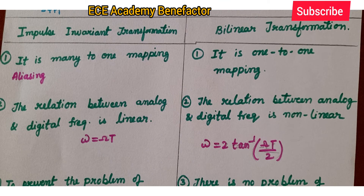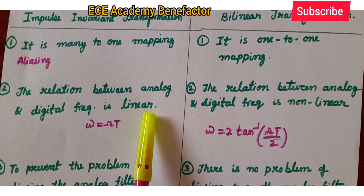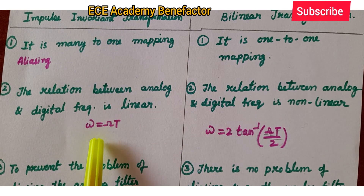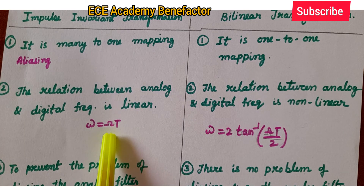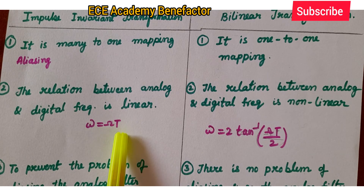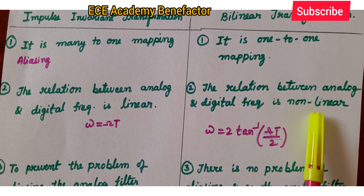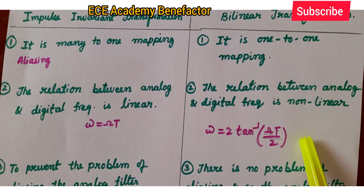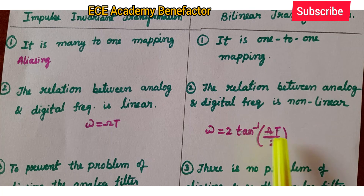The second point: under impulse invariant, the relation between digital frequency omega and analog frequency Omega is linear. Omega = Omega * T. The relation between analog and digital frequency is non-linear under bilinear transformation. Omega is the digital frequency and Omega is the analog frequency. The relation is: omega = 2 * tan⁻¹(Omega * T / 2).